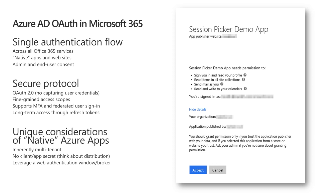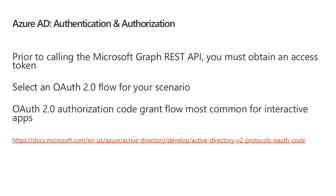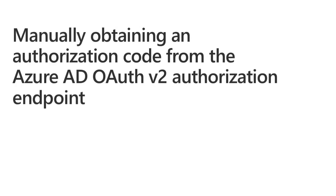The v2 endpoint allows a bit more flexibility in defining permissions for dynamic consent. The recommendation is to use the v2 endpoint and the Microsoft Authentication Library. Prior to calling the Microsoft Graph REST API you must obtain an access token. The OAuth2 authorization code grant flow is the most common one to use for interactive apps such as web applications. Let's look at how to manually obtain an authorization code from Azure AD using the Azure AD OAuth v2 authorization endpoint.